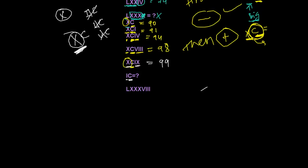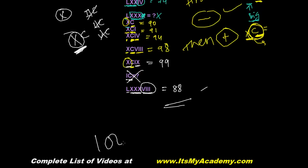So LXXXVIII: 50, 60, 70, 80 — the sequence is breaking here, so I take VIII all together, which is 8. So 80 plus 8 is 88. In the next video we'll be learning 100 up to around 500, and then 500 to 1000, and after that how to write 6000, 7000, 8000. If you have any problems feel free to comment below this video, and please subscribe to the channel. Goodbye!